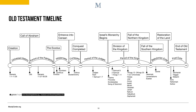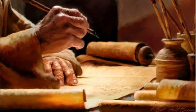Date is another key historical-cultural factor. Knowing when a book was written or when events occurred enables the student to look outside the text for contemporary historical corroboration and insights.